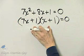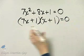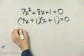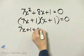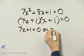So we have a factored polynomial on one side, 0 on the other side. So now we set each factor equal to 0 and then we solve.